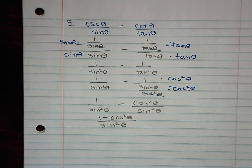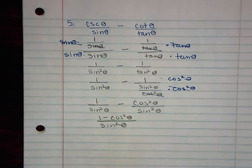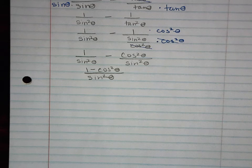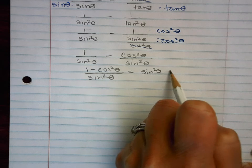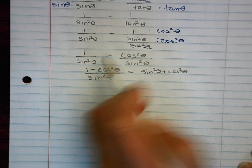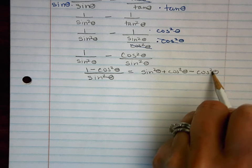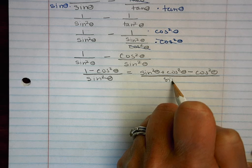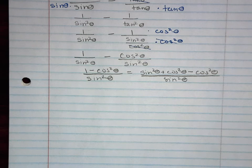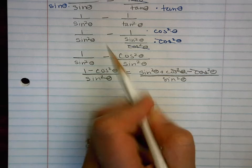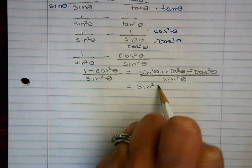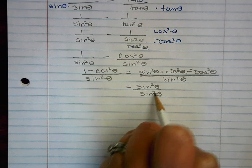I can keep simplifying this. I'm going to use the identity for 1, so I know that 1 is the same as sine squared plus cosine squared, and then I still have a minus cosine squared. From there I can see that the cosine squareds reduce, so I'm going to go ahead and cancel that out. And then I have sine squared divided by sine squared, which is just 1.